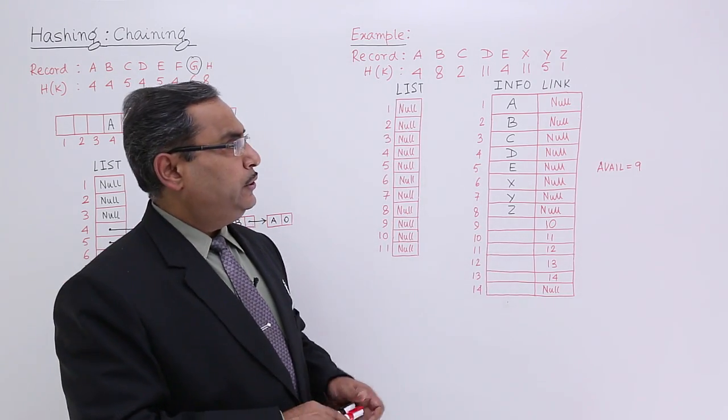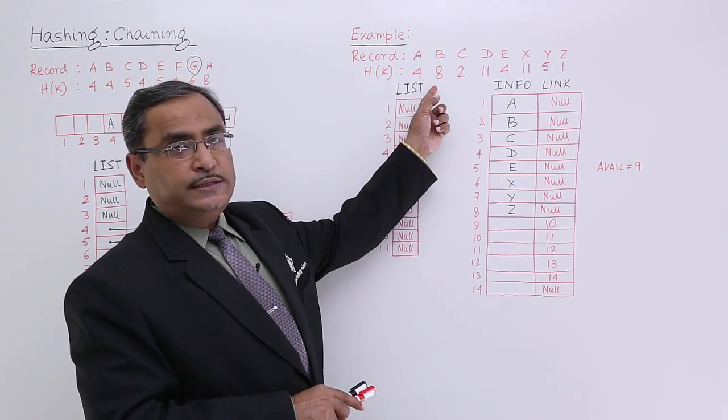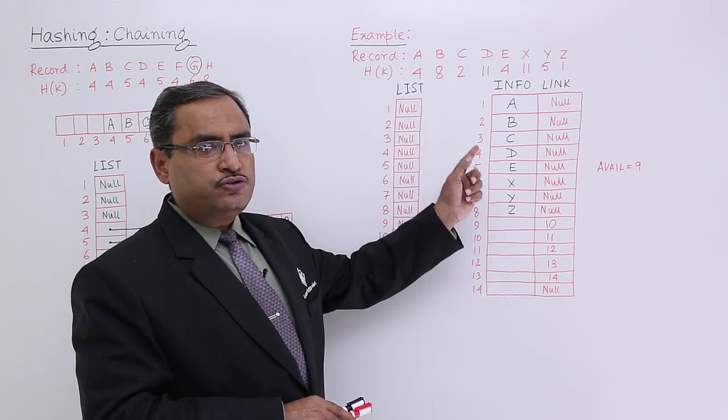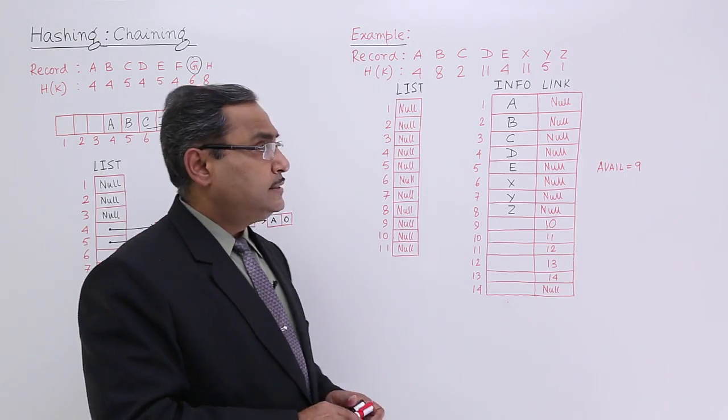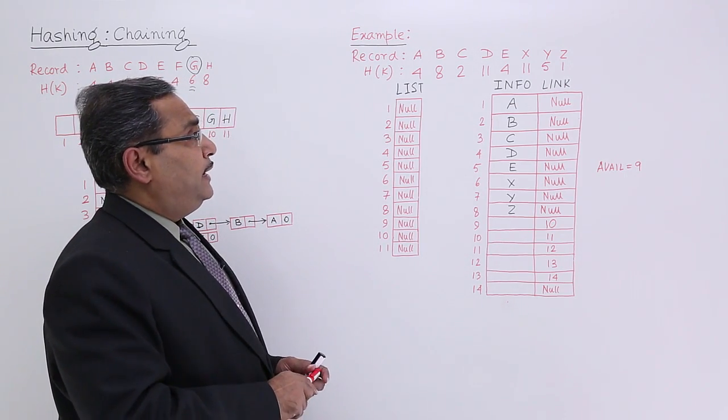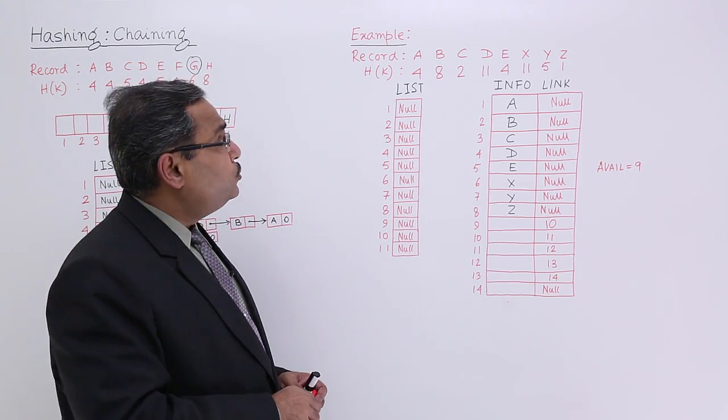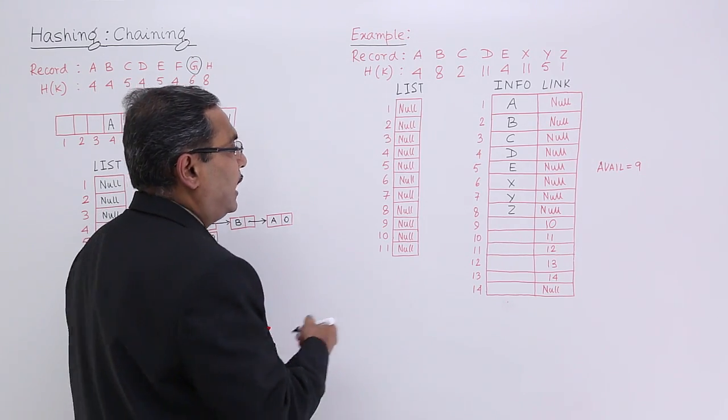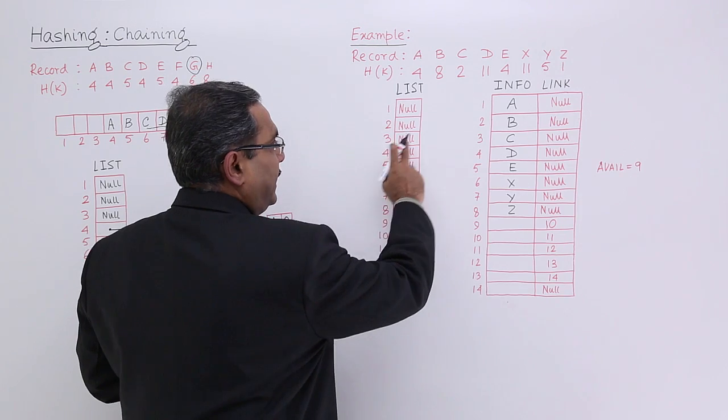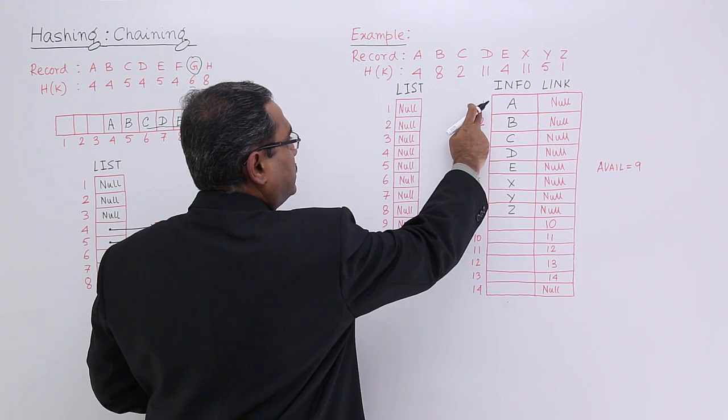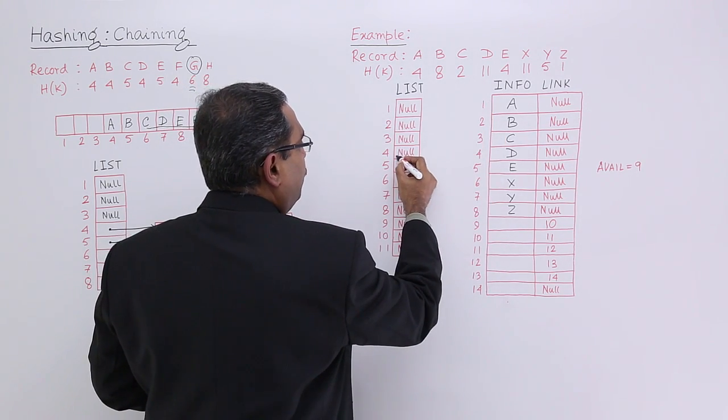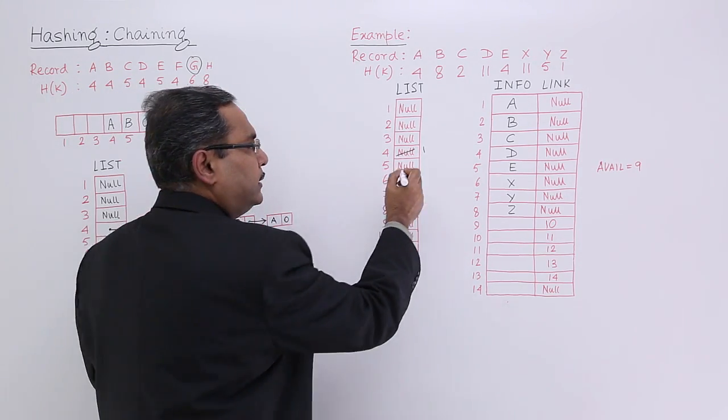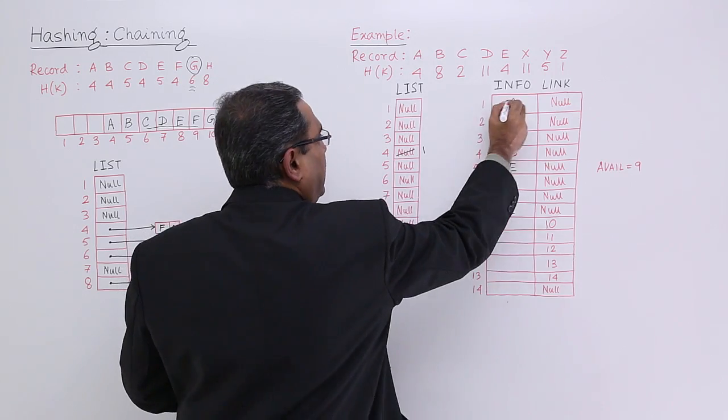Now, let us consider this particular example for this set of records and the corresponding h of k values. We are going to construct chaining here. A is the record whose h of k is 4. I shall come to the fourth location, and A has location number 1. So I shall write 1 here so that it is forming a linked list.